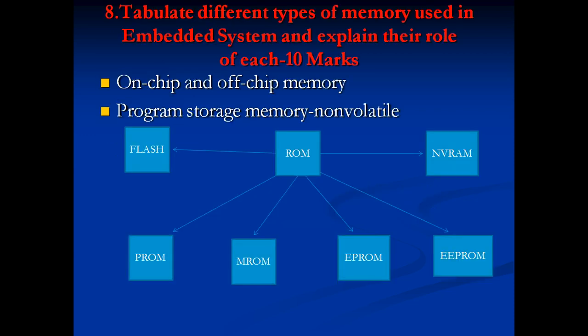Next: tabulate different types of memories used in embedded systems and explain their role, asked for 10 marks. You have to explain both types of memories — RAM as well as ROM. We will start with ROM. You can see the diagram showing the different types of ROMs available.